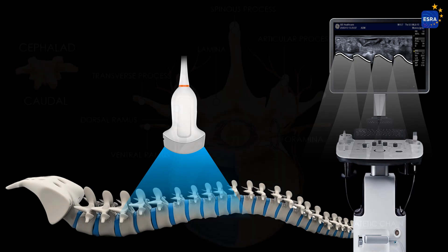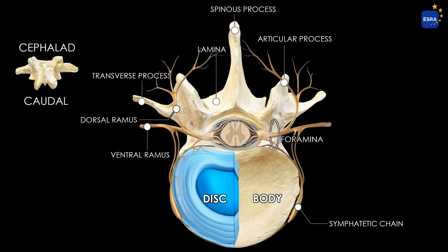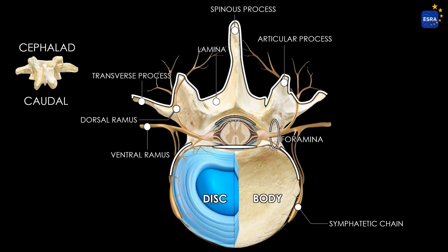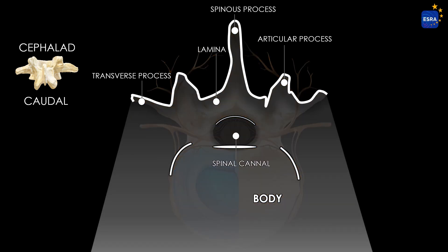Each bony prominence of the vertebrae will produce a characteristic acoustic shadow. Therefore, we must be able to determine the position of our ultrasound probe based on the shadows and gaps observed on the screen.